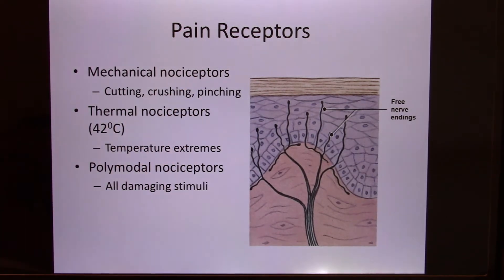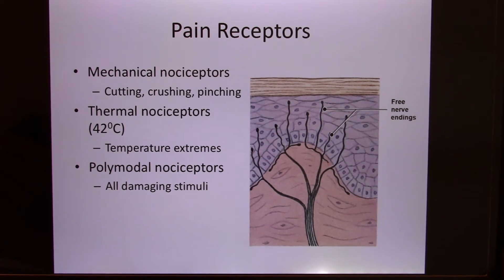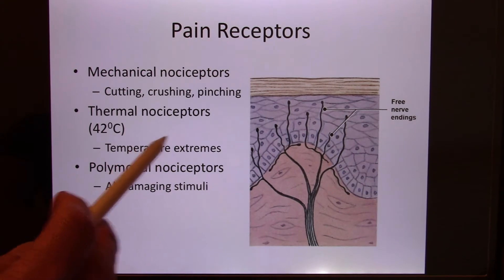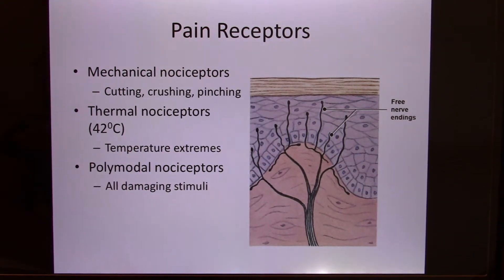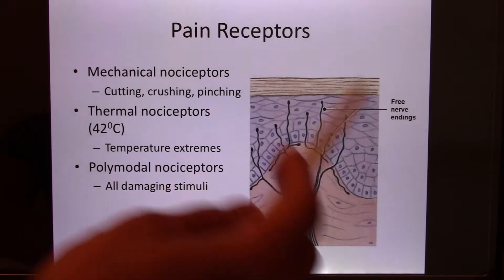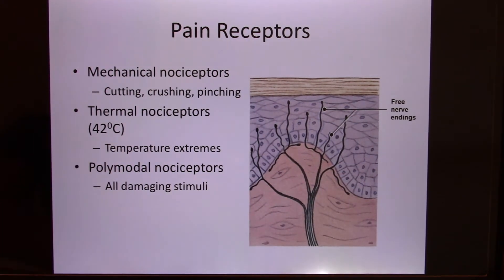Your skin also has temperature sensors — it senses cold and it senses hot, and they have different sensors. But if the temperature goes over 42 degrees Celsius, it's not the hot sensor that activates — it's the pain sensor. We're going to talk about a girl who could not feel pain, called congenital insensitivity to pain. She has no problem putting her hand into boiling water because she does not have the pain sensation. She can feel hot, but over 42 degrees activates pain, and she cannot feel that.